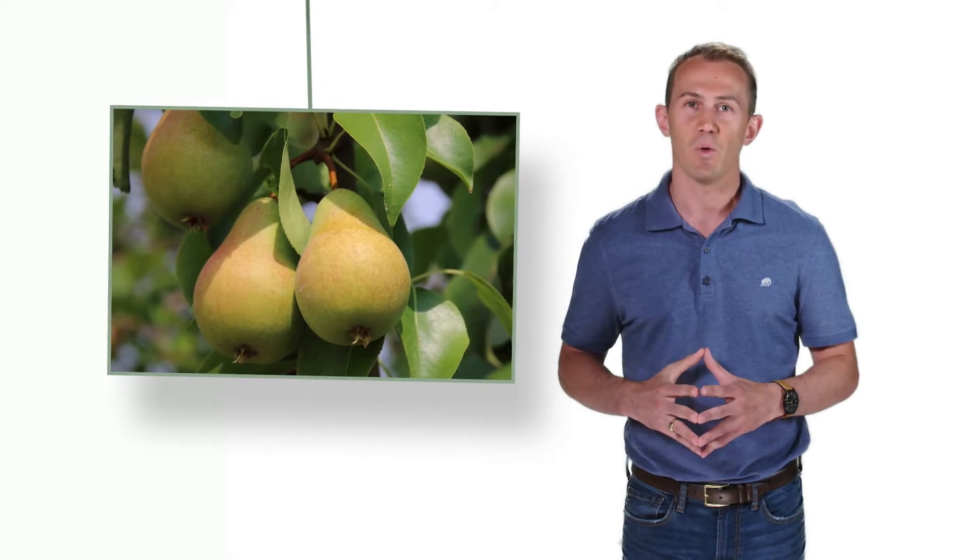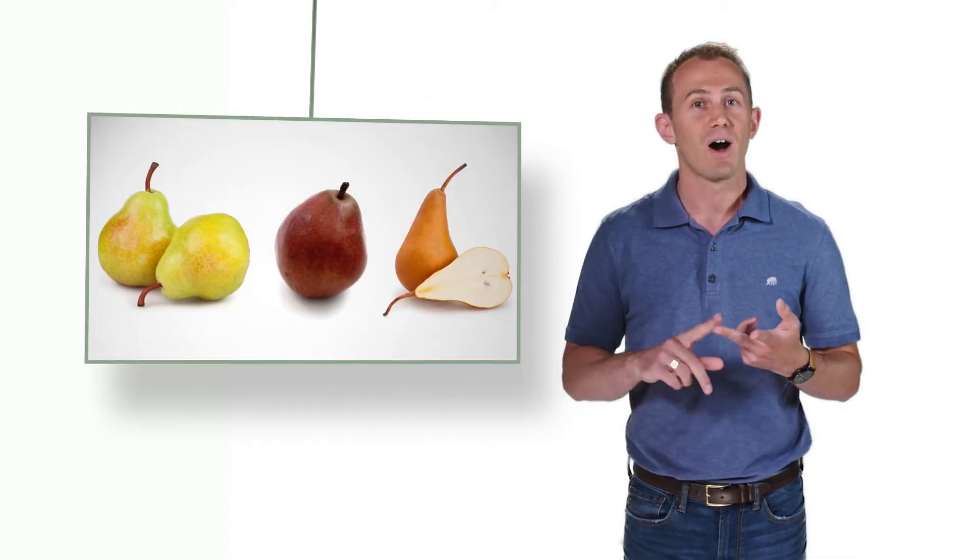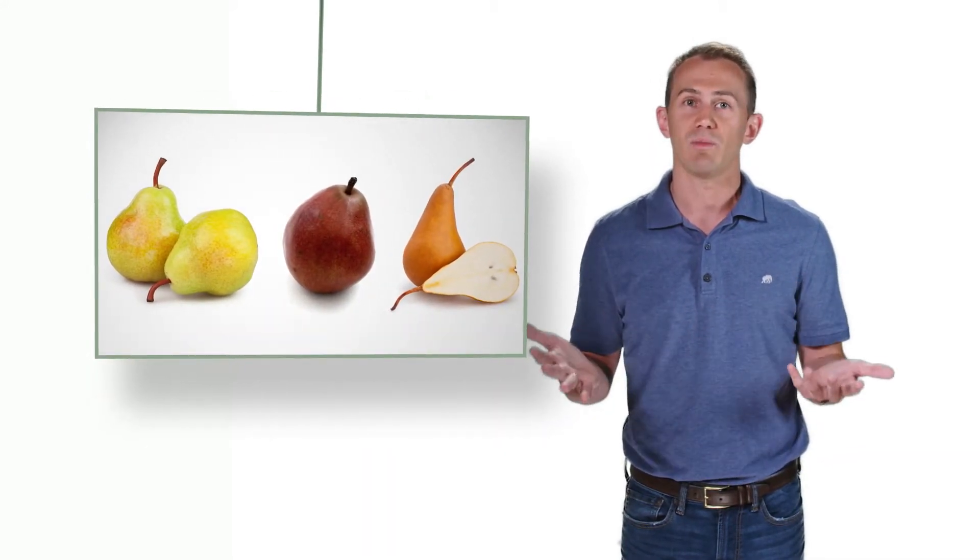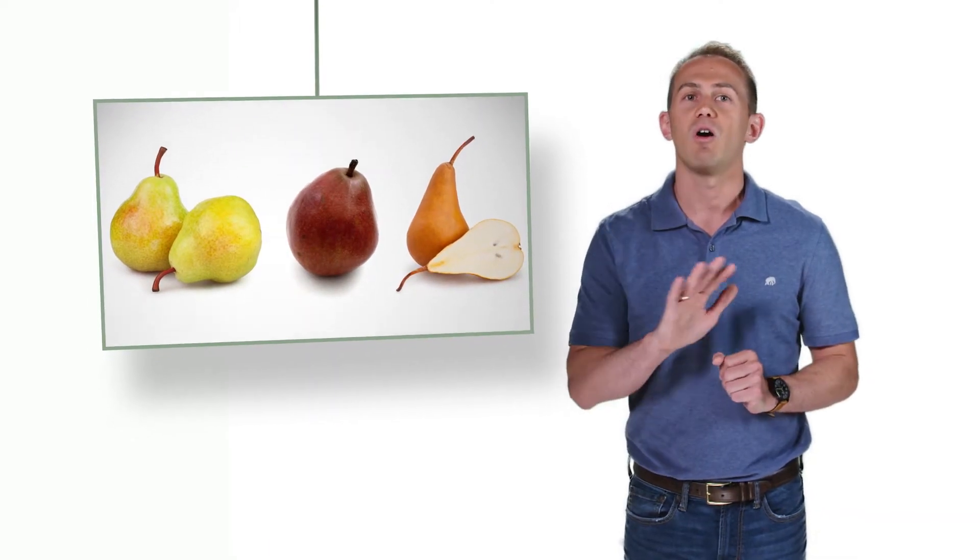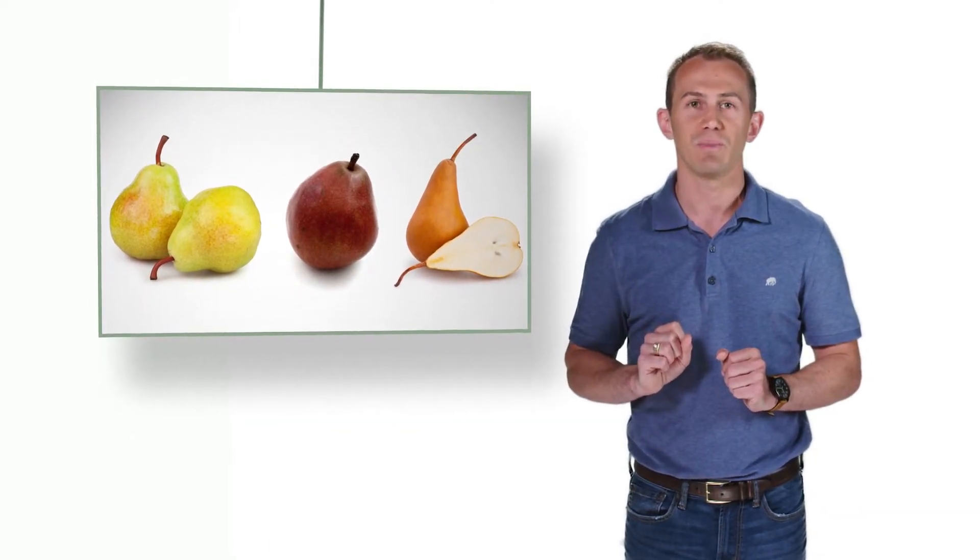While pear trees are native to Europe and Asia, they can be grown around the world due to their resistance to cold weather. Bartlett, Bosk, and Danju are the most common varieties of pears found on store shelves, but all varieties provide similar nutritional benefits.